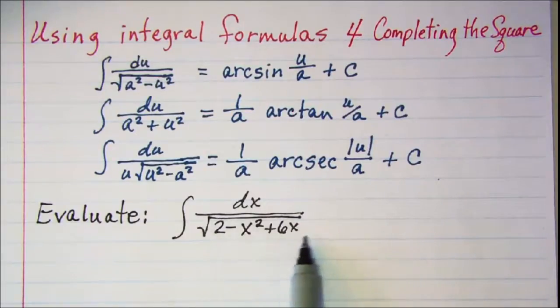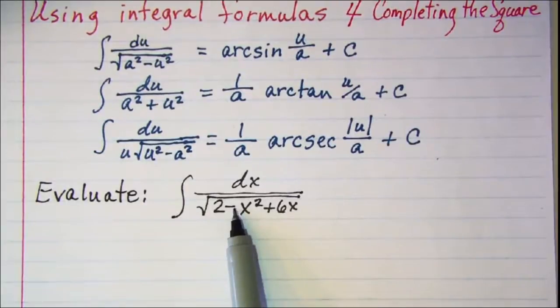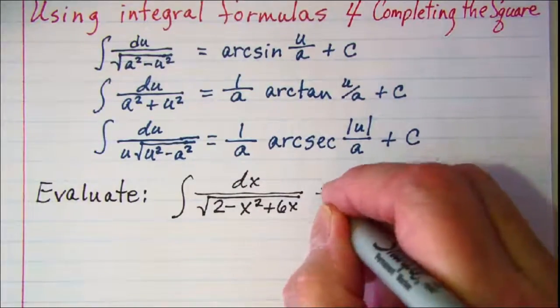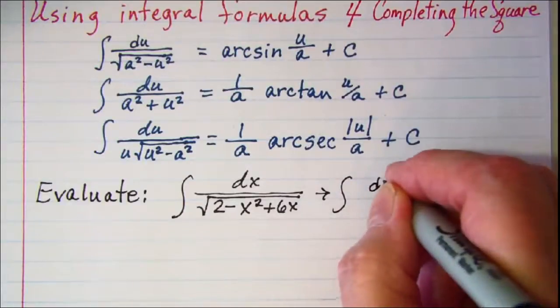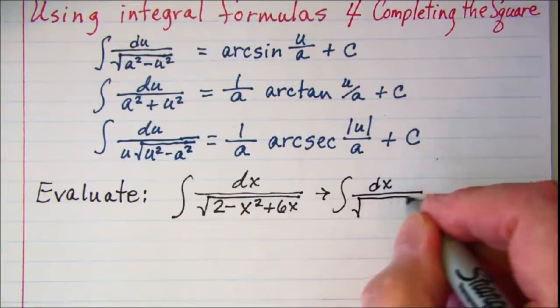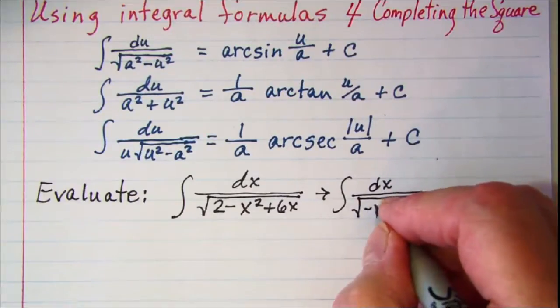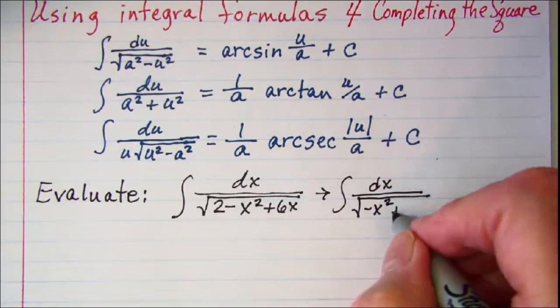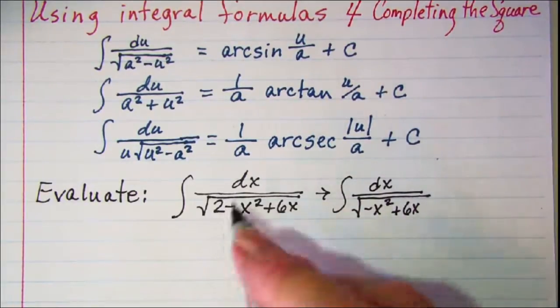Now what I first want to do is rewrite this radicand so that it's in descending order of the powers and then I will complete the square on that. So this is integral dx over square root of negative x squared plus 6x plus 2.